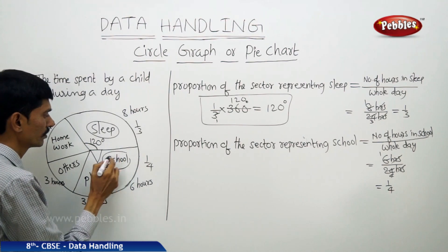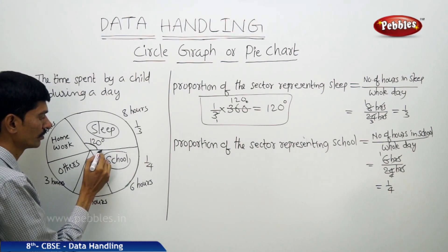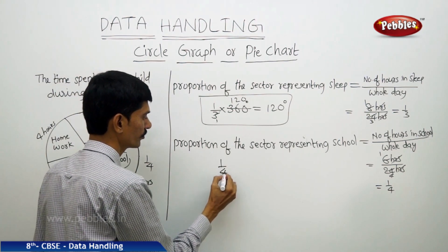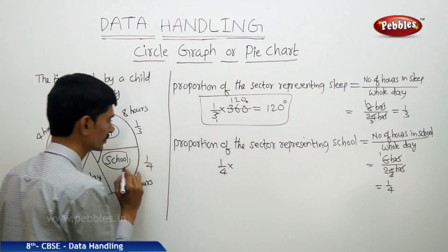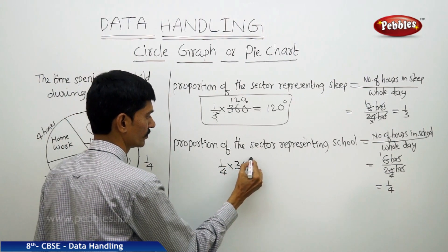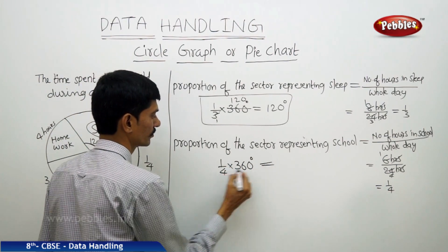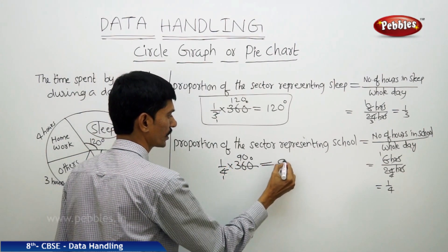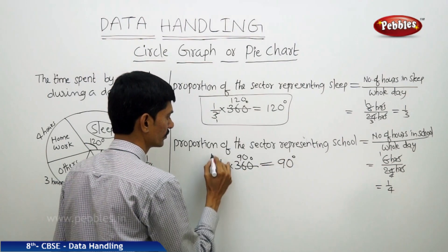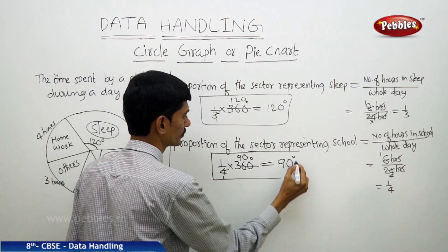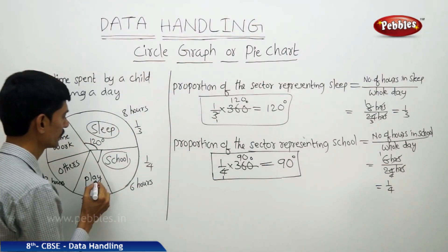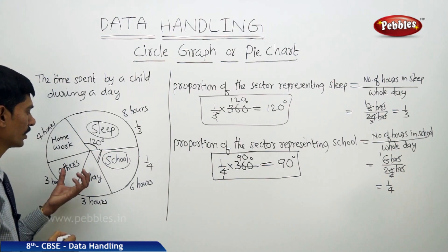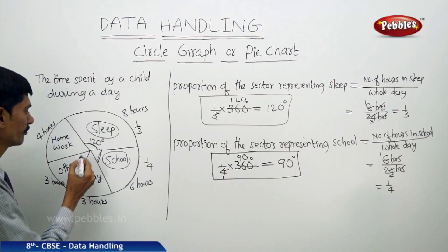The angle of the sector representing school is one fourth of the whole circle, so one fourth of 360 degrees equals 90 degrees. So the angle of the sector school is 90 degrees — a right angle. Similarly, we can find the angle of each sector made at the center.